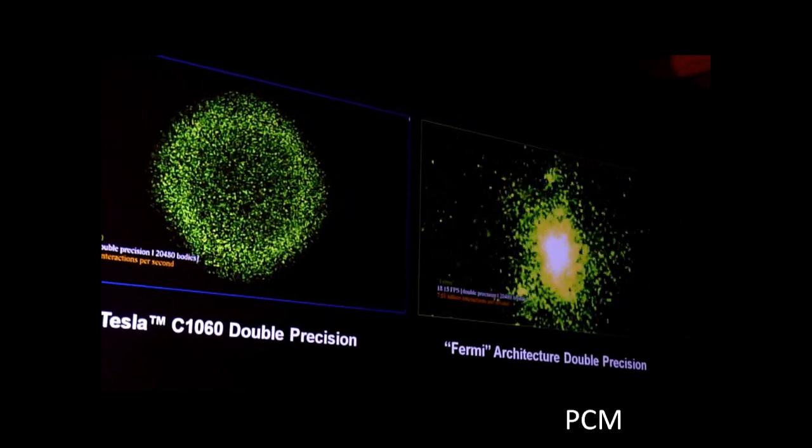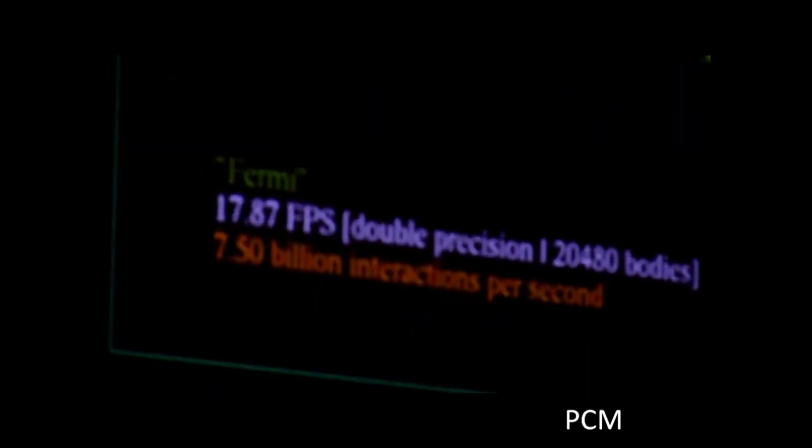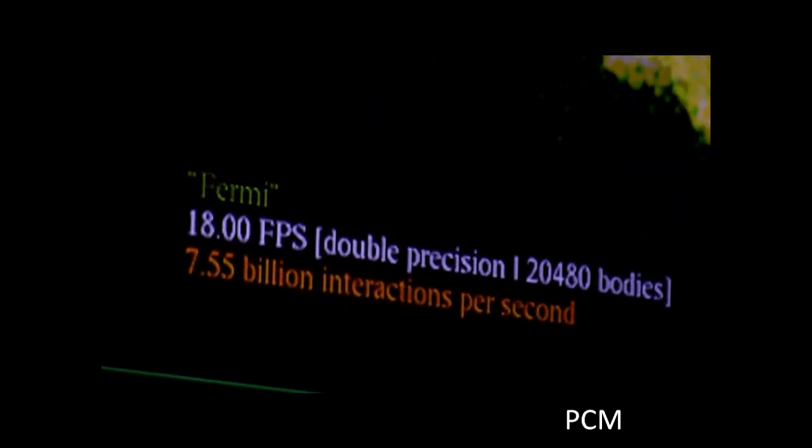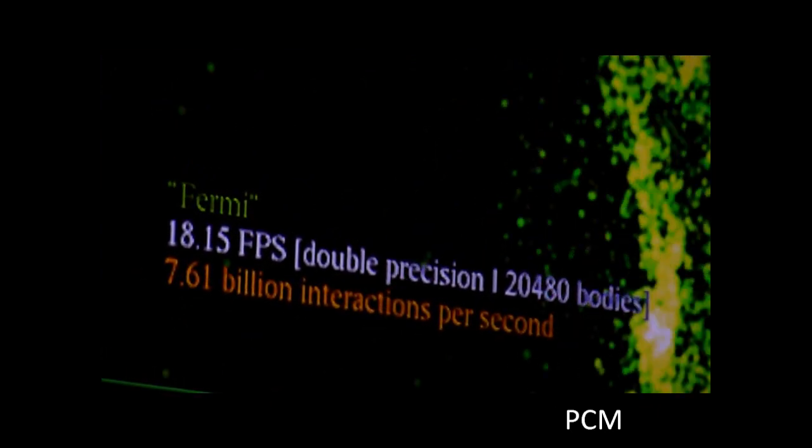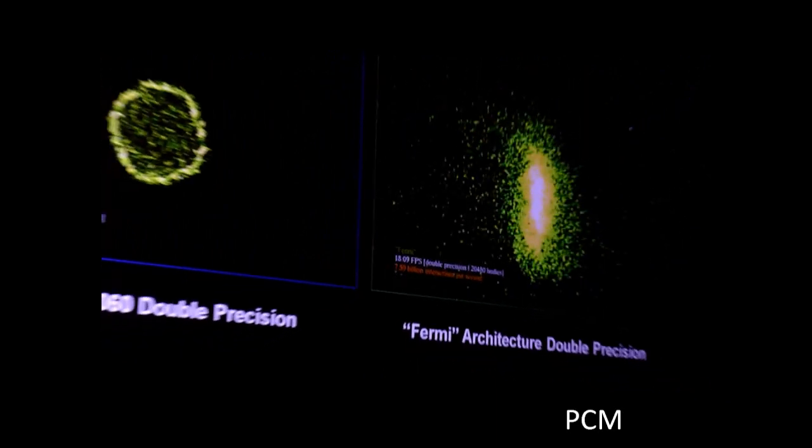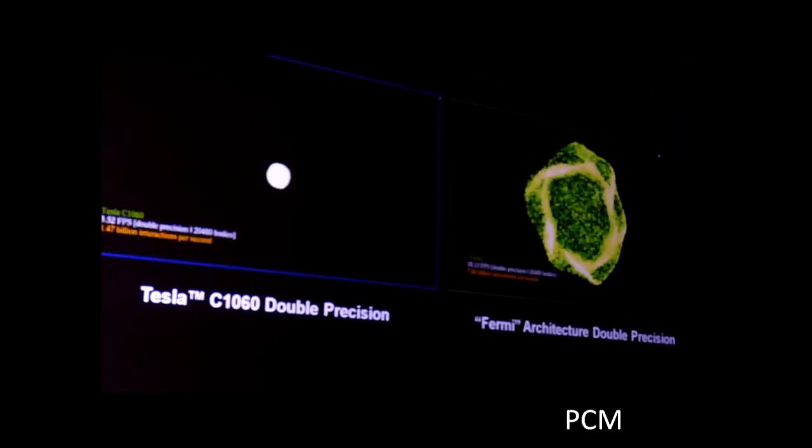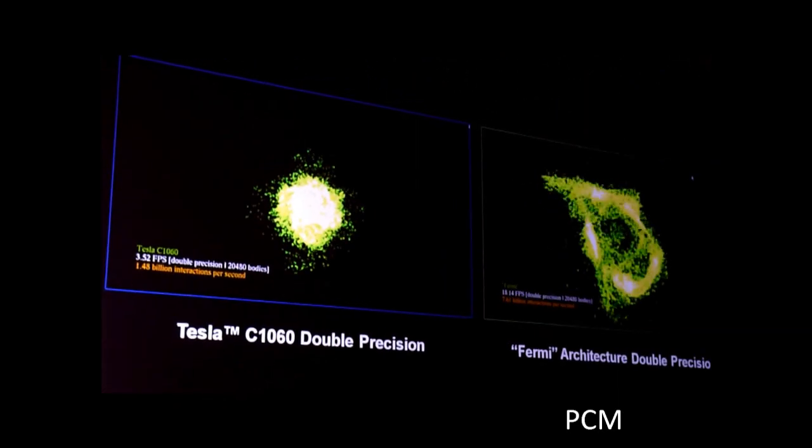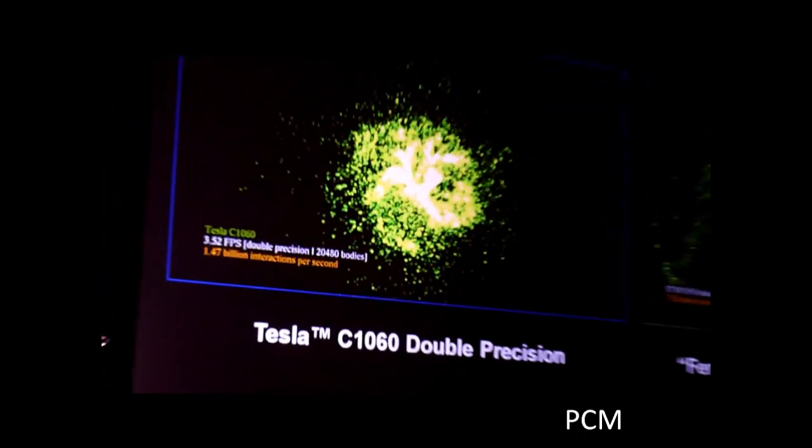So on your right is Fermi, the first silicon of Fermi. And this is not running at speed, and so with a little bit of tuning that they've had the last few days, they've been able to achieve a speed of about five times. So generation to generation, you're currently looking at a few-day-old silicon that has sped up five times.